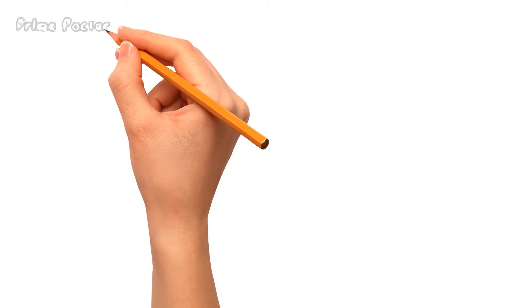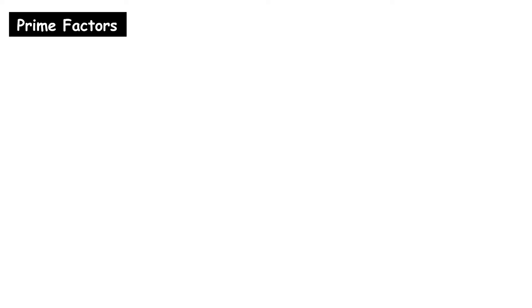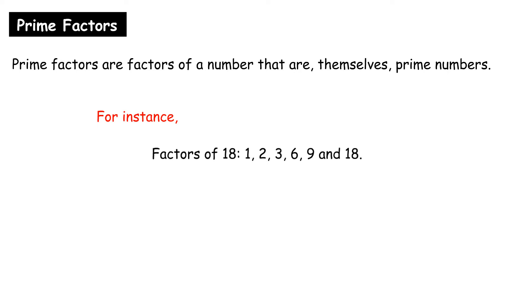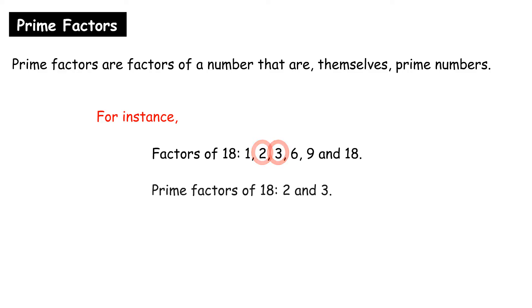Now let us learn prime factors. Prime factors are factors of a number that are, themselves, prime numbers. For instance, factors of 18 are 1, 2, 3, 6, 9 and 18. Among these numbers, 2 and 3 are prime numbers, so prime factors of 18 are 2 and 3.